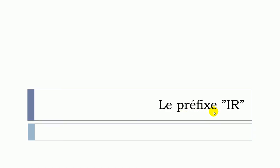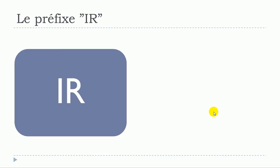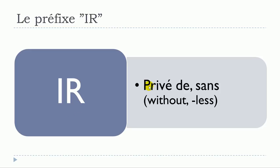If you remember, when we talk about a prefix, we're talking about letters — in this case IR — that you add at the beginning of an existing word. By adding these letters, you modify the original meaning of the word. In this case, the words will start with R, and the meaning will become privé de or sans.